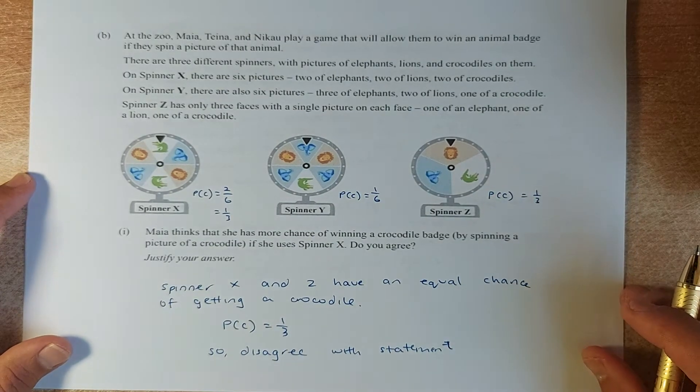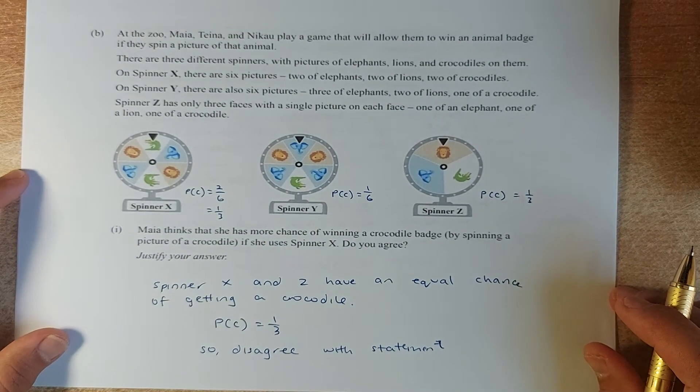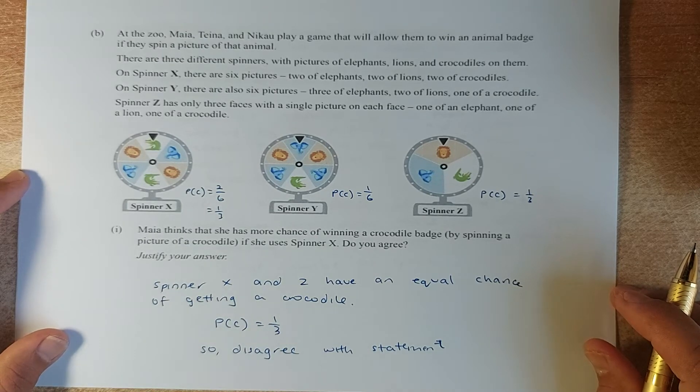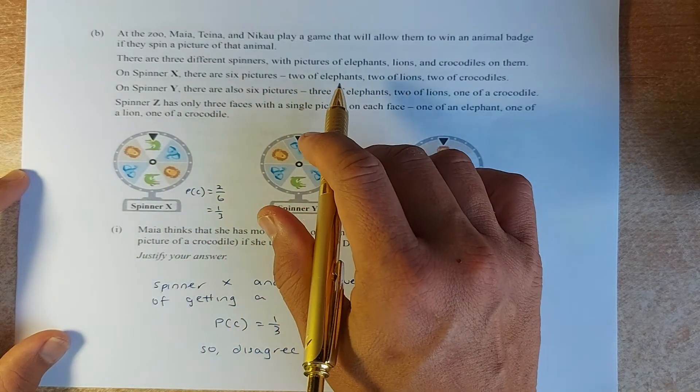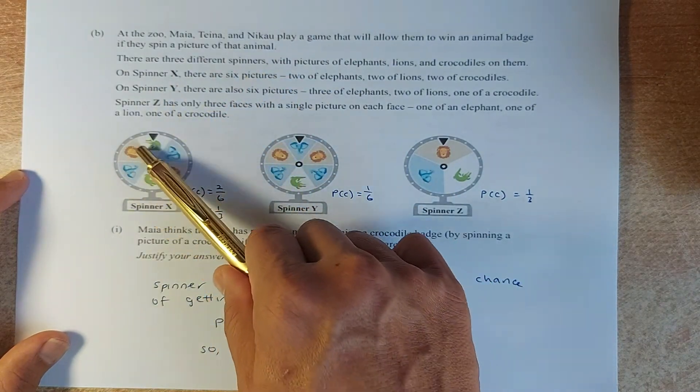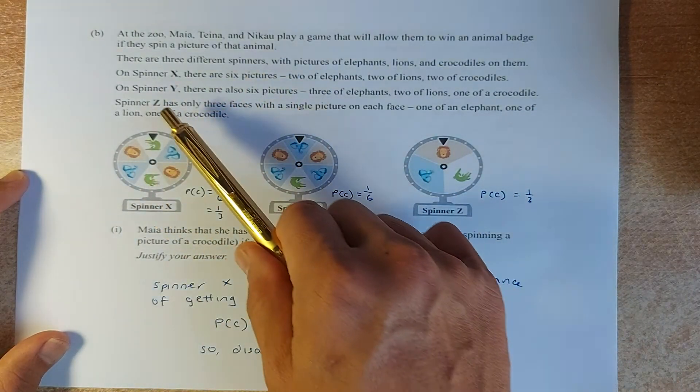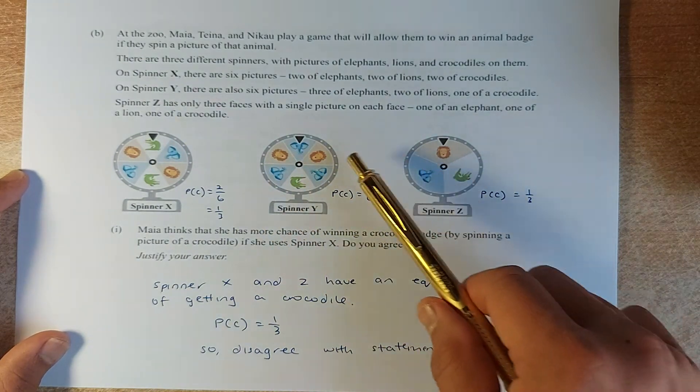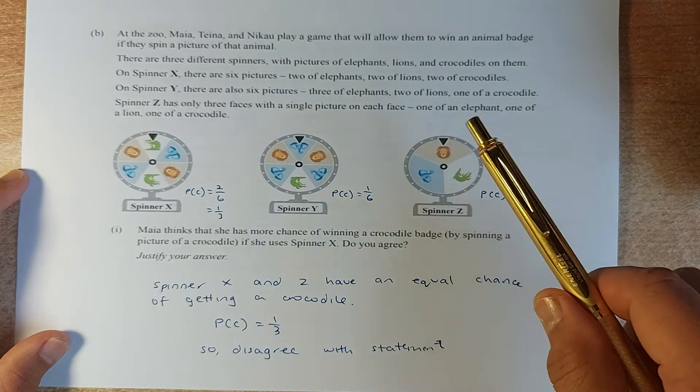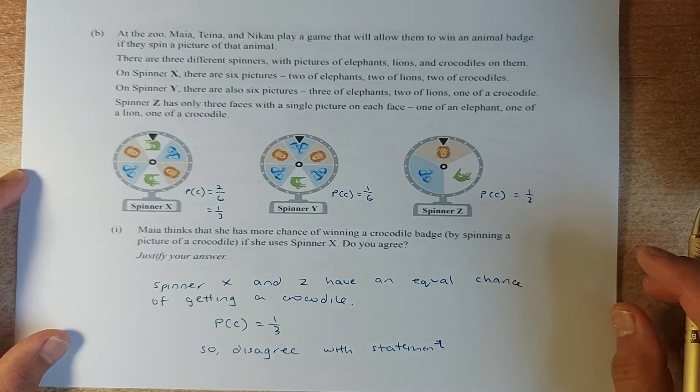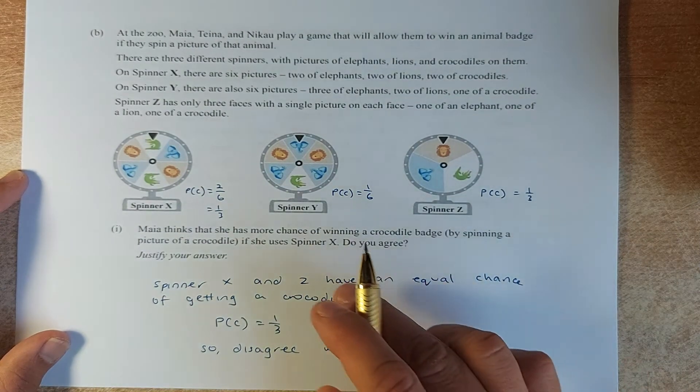Now next question, B now. Let's read it. At the zoo, Maya, Taina and Nikau play a game. They will allow them to collect to win an animal badge if they spin a picture of the animal. There are different spinners with pictures of elephants, lions and crocodiles. On spinner X, there are six pictures: two elephants, two lions and two crocodiles. Spinner Y, you have three elephants, two lions and one crocodile. While in spinner Z, there is one lion, one elephant and one crocodile.